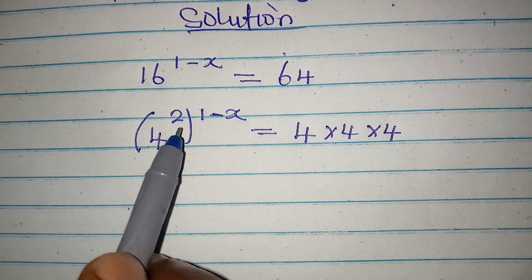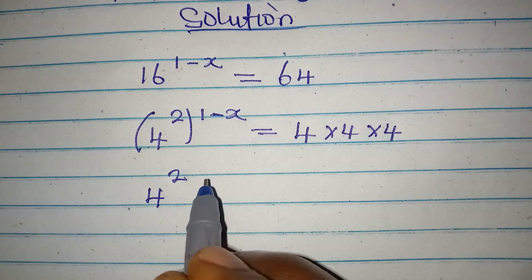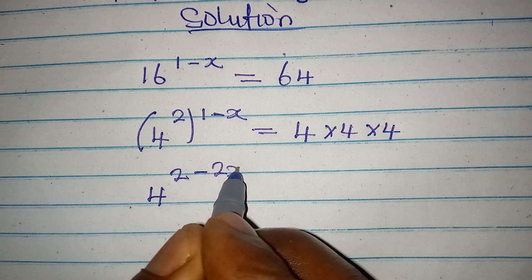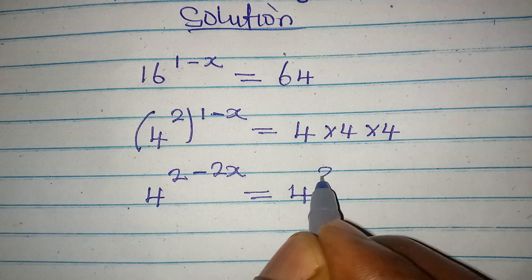So 4 to the power of, we can open this. So we have 2 times 1 is 2, then 2 times minus x is minus 2x. This will be equal to 4 in 3 places.